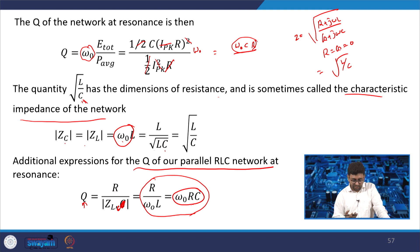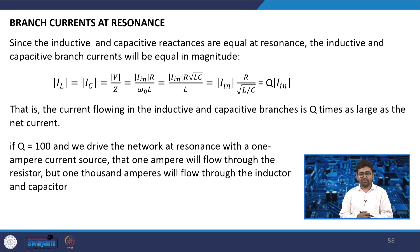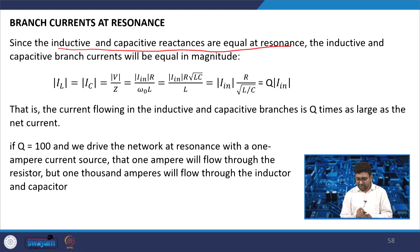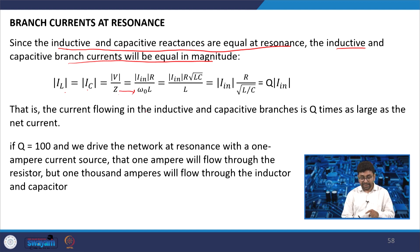Similarly, we can get Q for a series RLC network. There is one more important feature of the tank circuit used in tuned amplifier design: since inductive and capacitive reactances are equal at resonance, the inductive and capacitive branch currents are equal in magnitude. If you write IL = IC = V/Z, where V = Iin × R and Z = ω₀L.